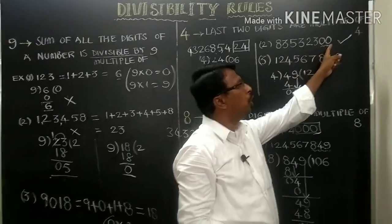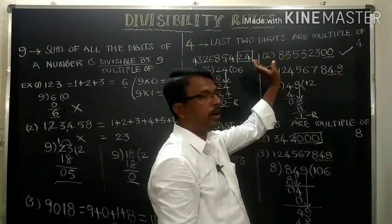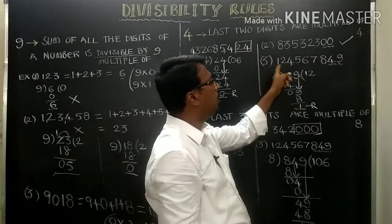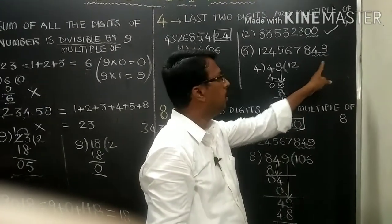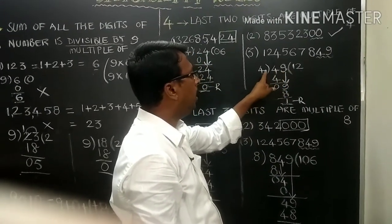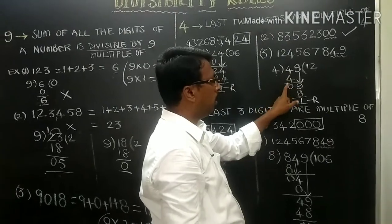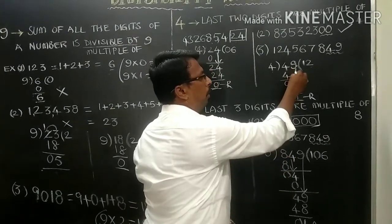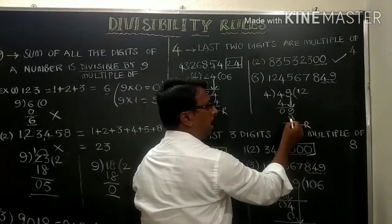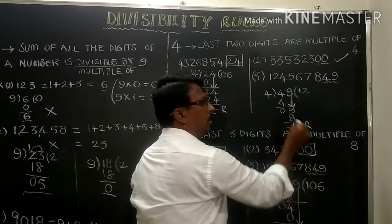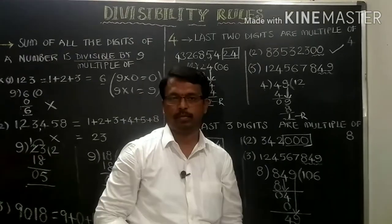If a number has 2 zeros at the last, the number can also be divided by 4. For another number with last two digits 24: we divide 24 by 4 — the remainder is 0, so 85,424 can be divided by 4. For last two digits 49: dividing 49 by 4 gives remainder 1, so that number can't be divided by 4.